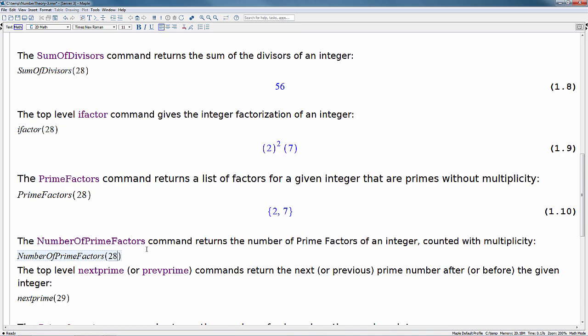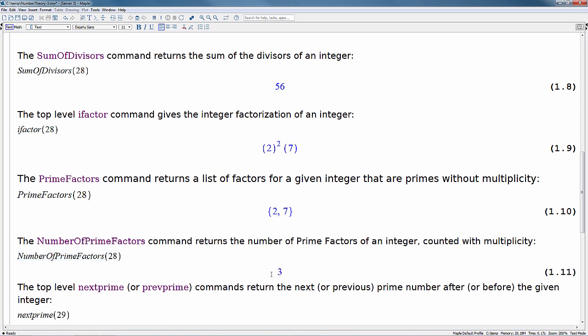The number of prime factors command returns the number of prime factors of an integer counted with multiplicity. So in this case, if we look at the previous two commands here, we see prime factors are 2 and 7. But we also see from ifactor that it's 2 times 2, so it's 2 squared times 7. So the number of prime factors counted with multiplicity obviously is going to be 3. So these 2, 2, and 7.